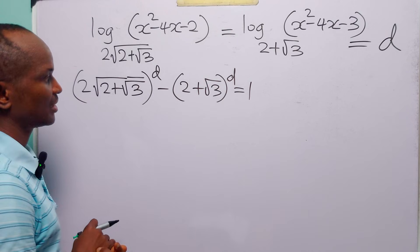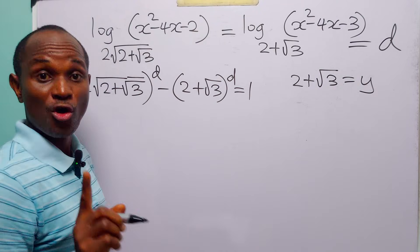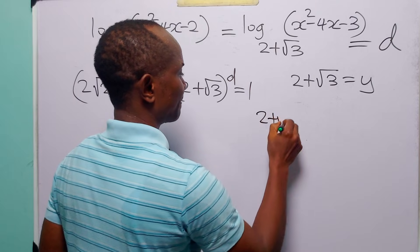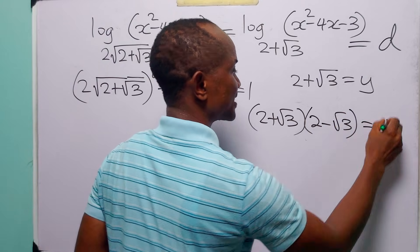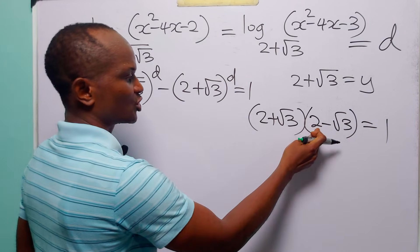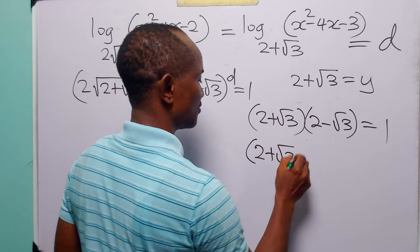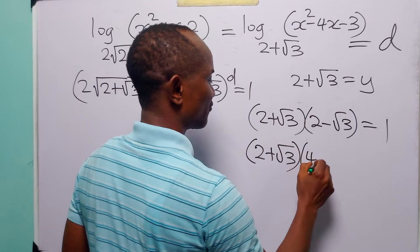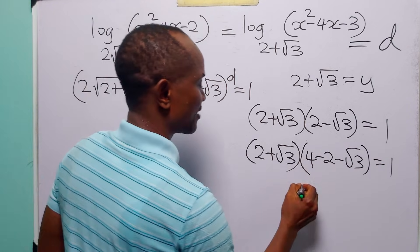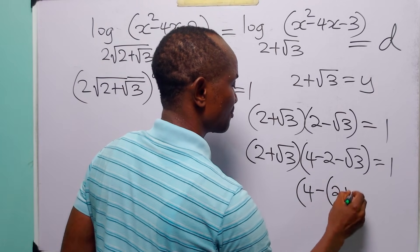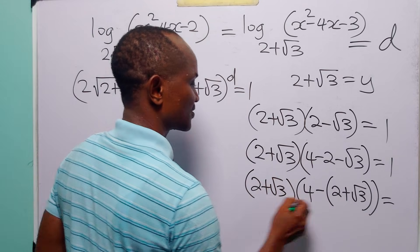To solve this equation, let 2 plus root 3 be equal to y. Remember that 2 plus root 3 multiplied by its conjugate 2 minus root 3 is equal to 1. We can write 2 minus root 3 as 4 minus 2 minus root 3, so we can write this as 2 plus root 3 multiplied by 4 minus 2 minus root 3 equals 1.